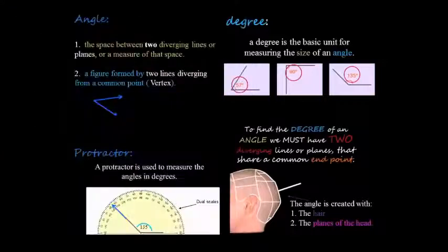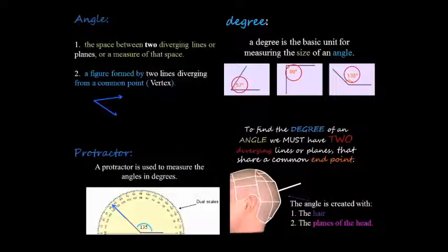The definition of an angle: the space between two diverging lines or planes, or a measure of that space, or a figure formed by two lines with a common point. So to find the degree of an angle, we must have two diverging lines or planes that share a common endpoint.